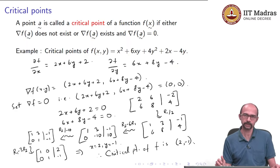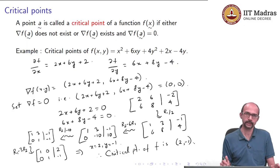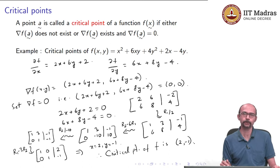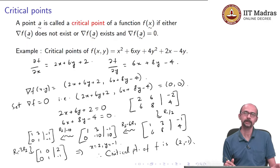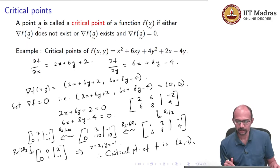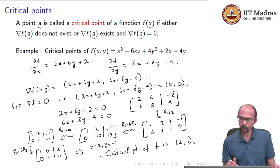There could be many critical points — there is no reason for there to be only one or two. For example, for sin(xy), setting the gradient to 0 gives a bunch of equations. One solution is (0, 0), but there will be infinitely many solutions corresponding to cos(xy) = 0.